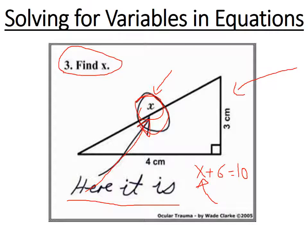Intuitively you could guess that 4 plus 6 equals 10, so X must be 4. That's solving for a variable in your head. Think about everyday life: if you bought one item for $6 and another item whose price you forgot, but the total was $10, you could figure out the missing price was $4. Isolating and solving for variables is used everywhere, making it one of the most important skills to learn this year.